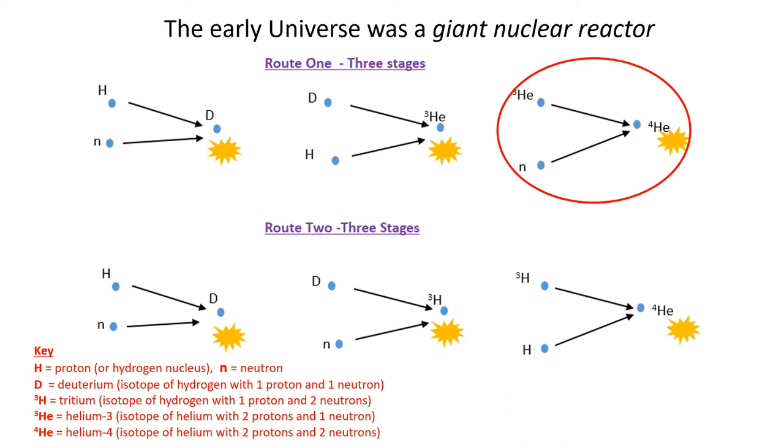At each stage in the process, a massive amount of energy is released. The lower part of the diagram shows a different route to go from hydrogen to helium-4, but the end result is the same. You start with hydrogen and neutrons and you get to helium-4 with a vast amount of energy being released.